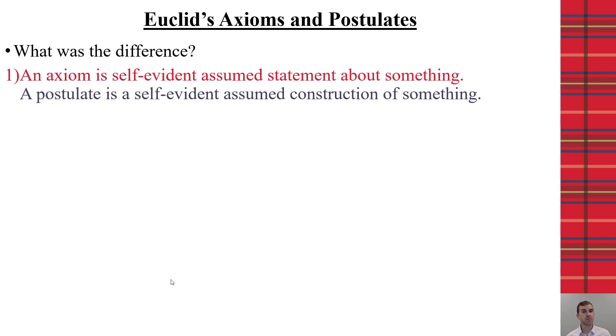Now, Euclid based his elements around axioms and postulates. So, it's important to recognize what is the difference between an axiom and a postulate as we look at these key concepts. An axiom is self-evident and is an assumed statement, whereas a postulate is an assumed construction.